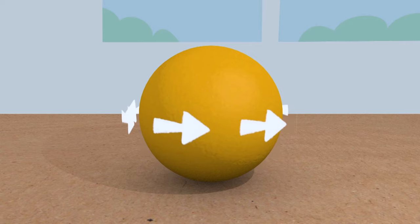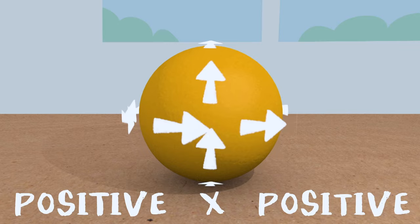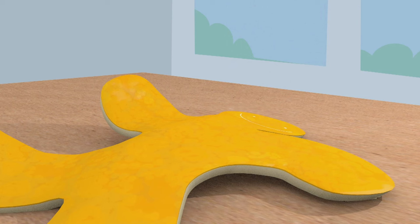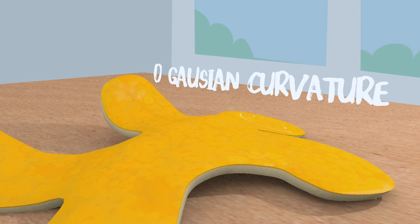With an orange, it's positive in that direction, positive in that direction. So whatever you do to the surface of an orange, it always has to have some kind of a bend away from you. You actually want your orange man to lie flat on a two-dimensional surface which has zero Gaussian curvature. There's no way that two positive numbers can ever multiply together to make zero.